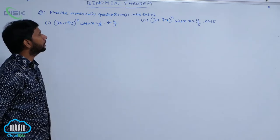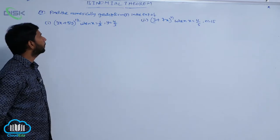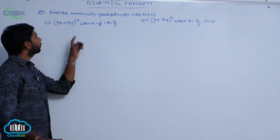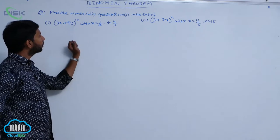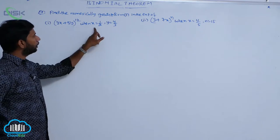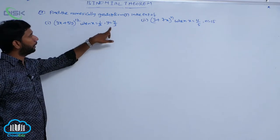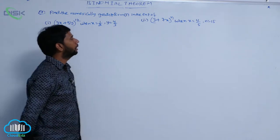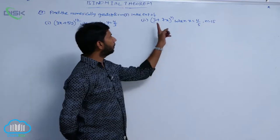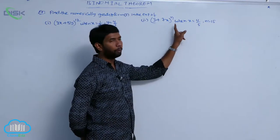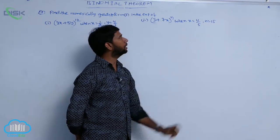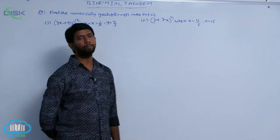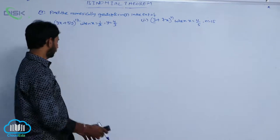Find the numerically greatest terms in the expansion of (3x + 5y)^12, when x = 1/2 and y = 4/3. The second problem is (3 + 7x)^n, when x = 4/5 and n = 15.